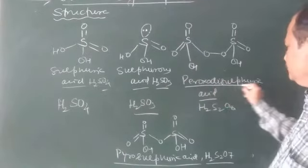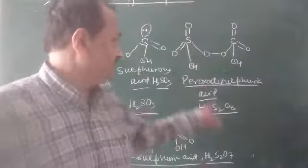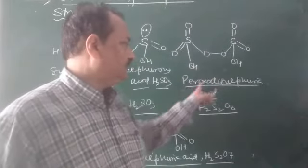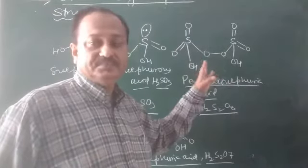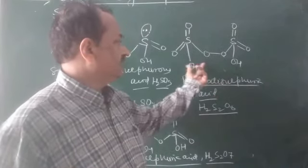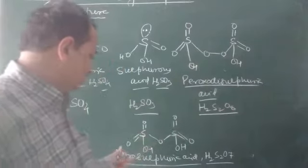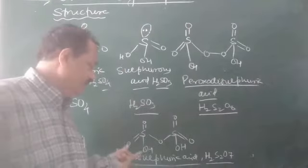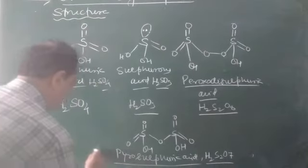Next is peroxodisulfuric acid, H₂S₂O₈. It is essentially a dimer of sulfuric acid, and it is also a dibasic acid. Then there is peroxosulfuric acid, commonly called oleum.